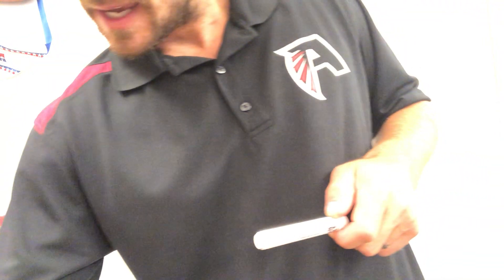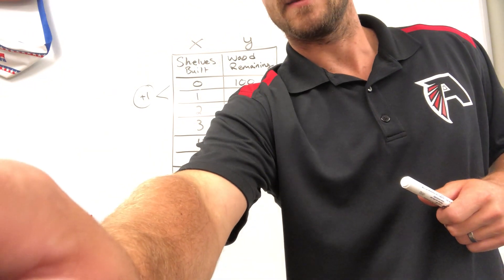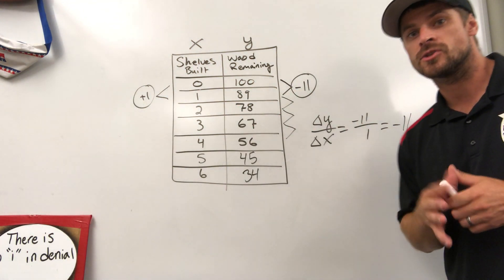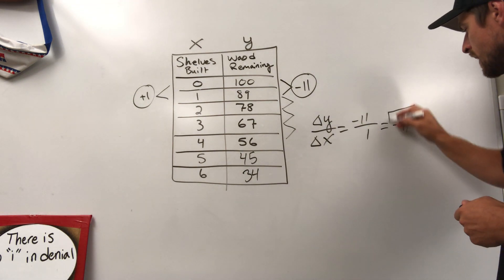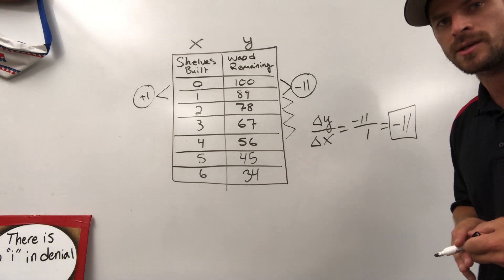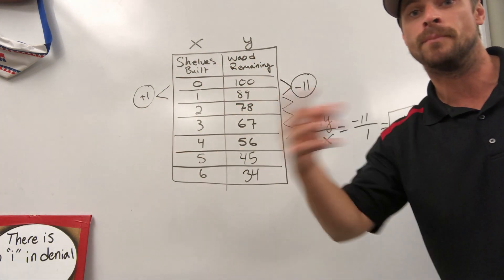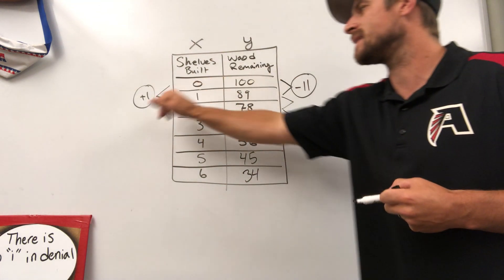One more question that was asked is, is the relationship positive or negative? Now my class had a really good conversation about this. Most kids assumed that it was a negative rate of change because our result came out to be negative. However, I did have a few students that wanted to argue that because that is negative and that is positive, we're dealing with both positive and negative. You have to combine these together.